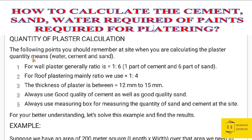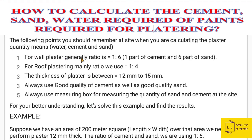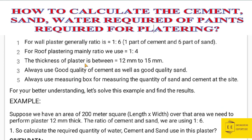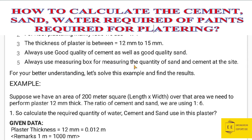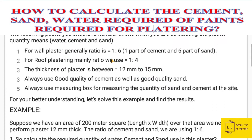Here are the following points you should remember at the site when calculating the plaster quantity: water, cement, and sand. For wall plaster, the ratio is generally taken as 1:6 — one part cement and six parts sand. For roof plastering, the ratio we use is 1:4. The thickness of plaster is between 12mm to 15mm. Always use good quality cement and good quality sand. Always use a measuring box for measuring the quantity of sand and cement at the site, so you can maintain the ratio — in this case 1:6.